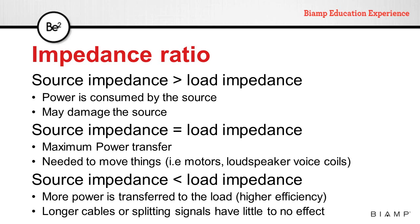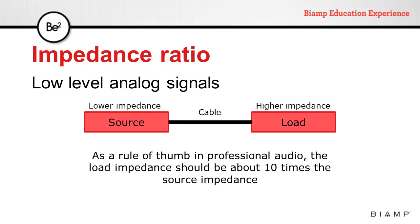The second case is that the source impedance is equal to the load impedance. In this case, we have maximum power transfer. This is needed whenever we need to create work — if we need to move something with a motor, we need maximum power transfer. The same applies to loudspeakers: we need to move the heavy voice coils, so we need maximum power transfer. The last ratio is that the source impedance is less than the load impedance. In this case, more power is transferred to the load, giving us higher efficiency, which allows us to use longer cables or split signals without any problems. As a rule of thumb in professional audio, we want the load impedance to be about 10 times the source impedance.